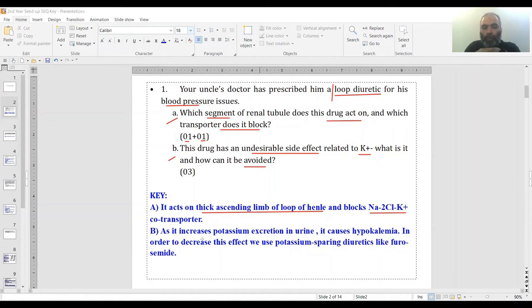The side effect is hypokalemia. This happens because when you block this particular transporter, potassium in the lumen is lost in the urine. The excretion of potassium increases, resulting in less potassium in the ECF, called hypokalemia. To prevent this, potassium-sparing diuretics like spironolactone can be used.